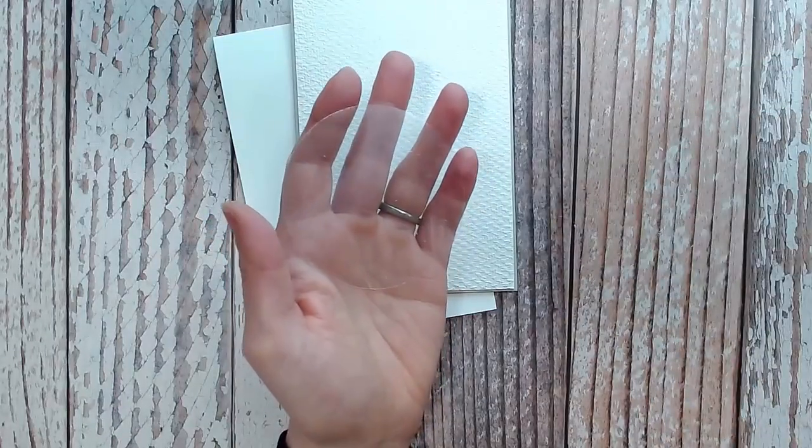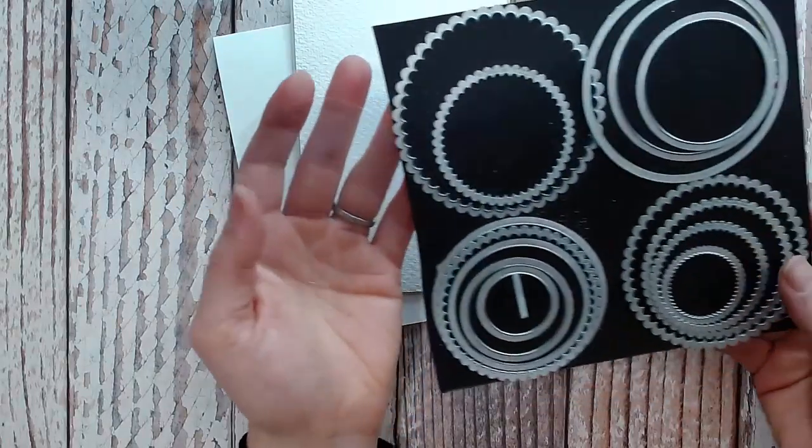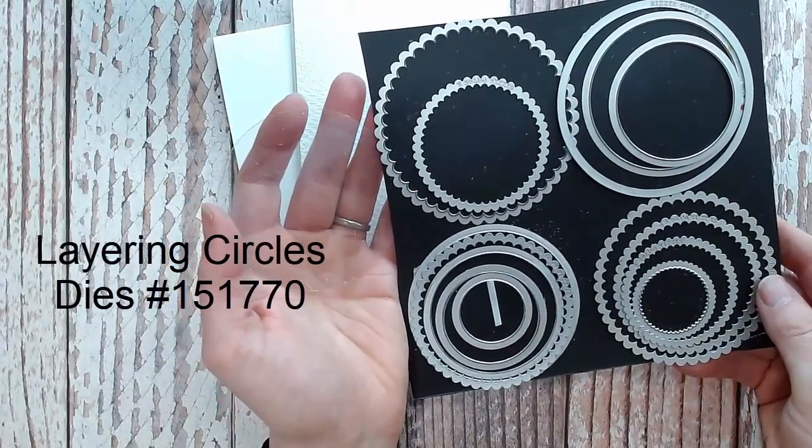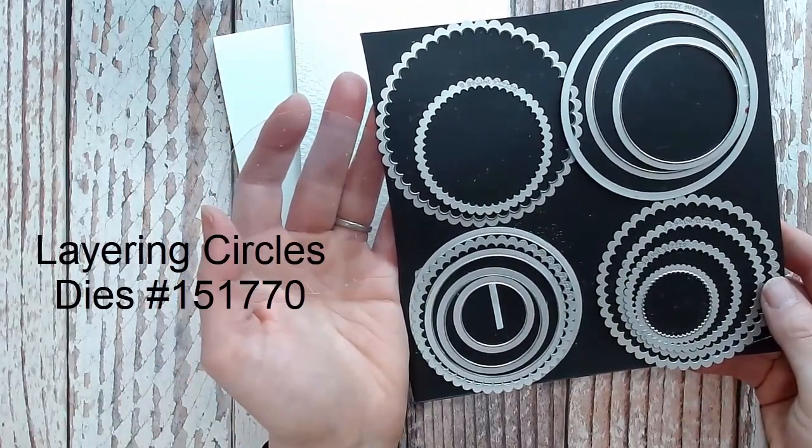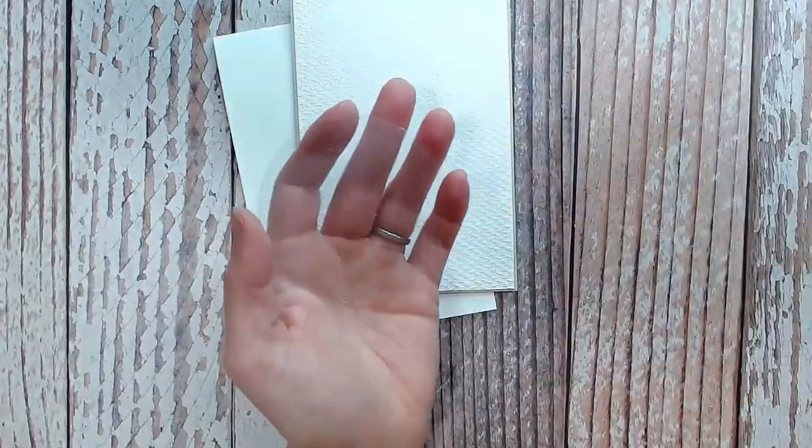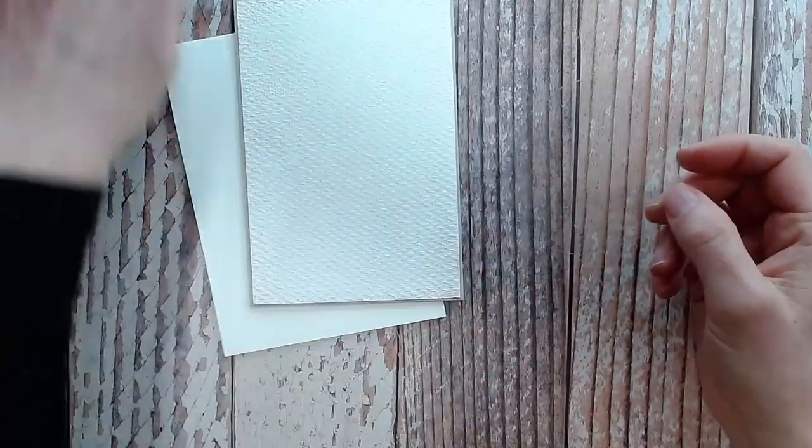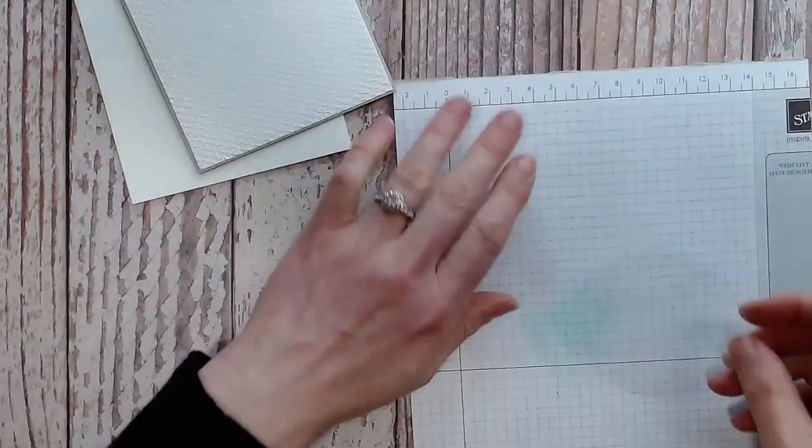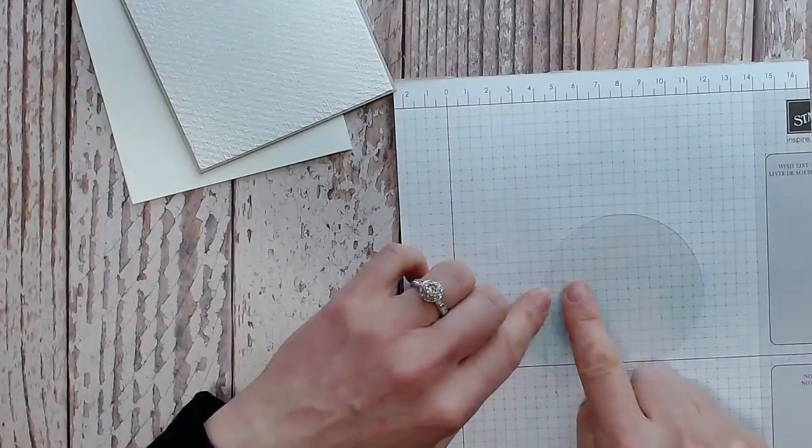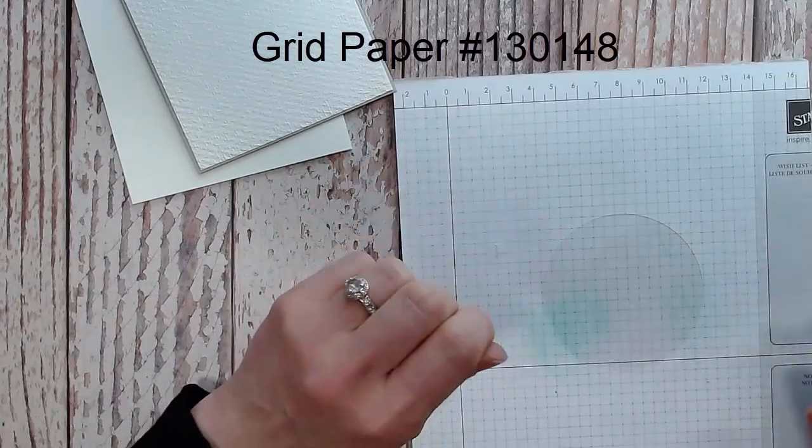I've gone ahead and cut the circle first and I've used the layering circle dies. These are a great tool to have in your stash because circles are otherwise impossible to cut unless you have dies or punches. Then I'm going to use grid paper because you can actually line up your strips using the grid that's on the grid paper.